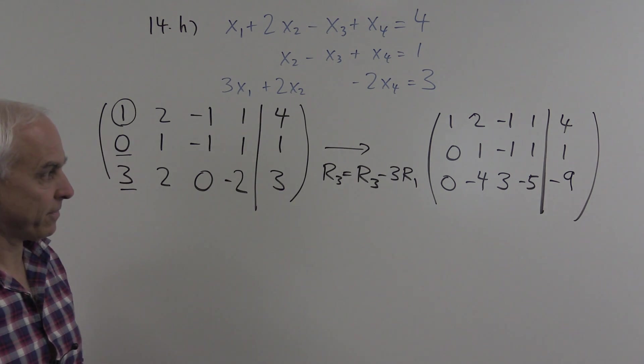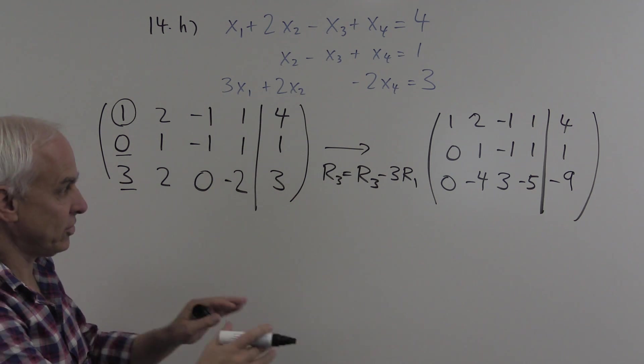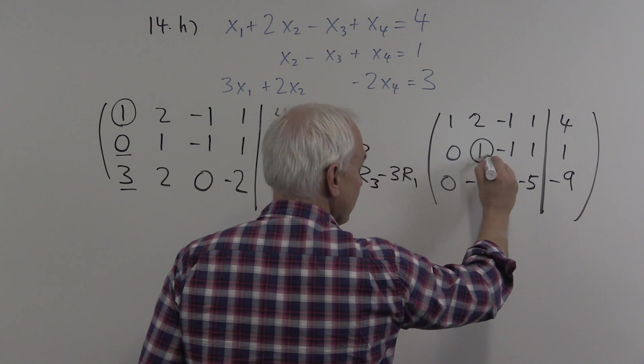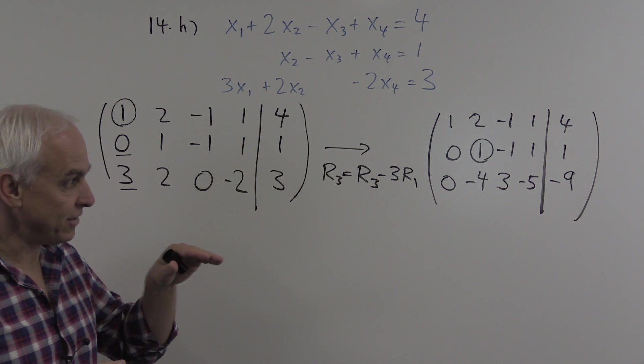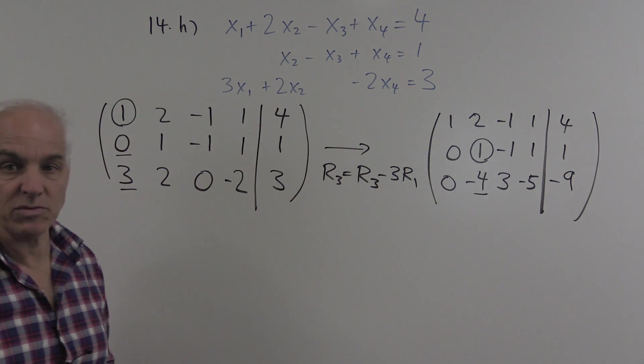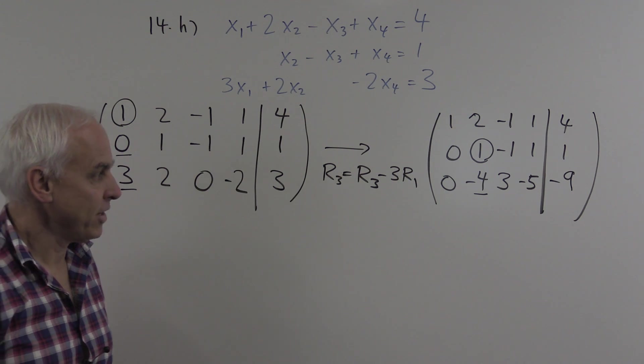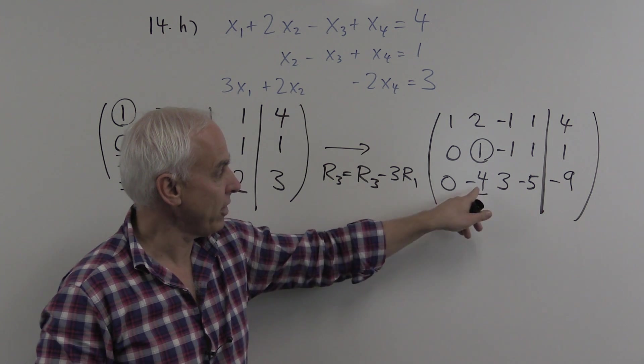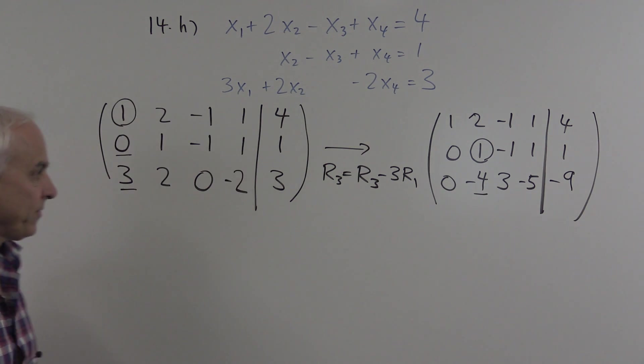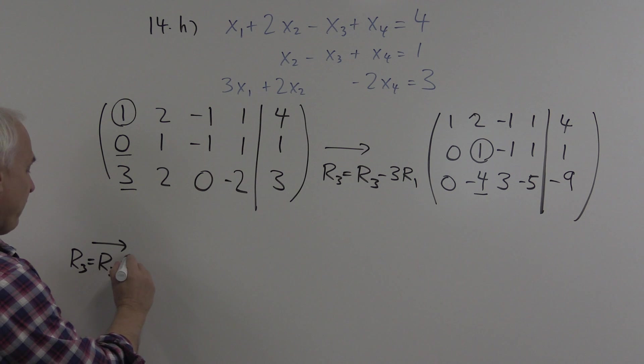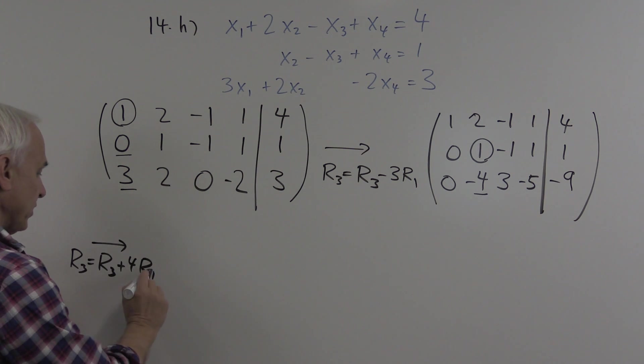Now we move down and to the right. Our next row has its leading entry, this one right here. We're going to use it to eliminate the corresponding entries in the rows below it. We're going to use this row here, add actually 4 times this row to this row, which will make that entry there at 0. The new row 3 is the old row 3 plus 4 times row 2.